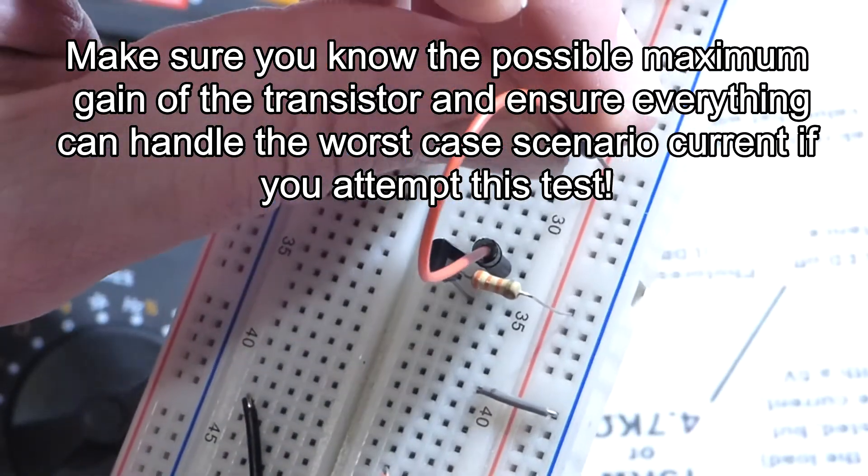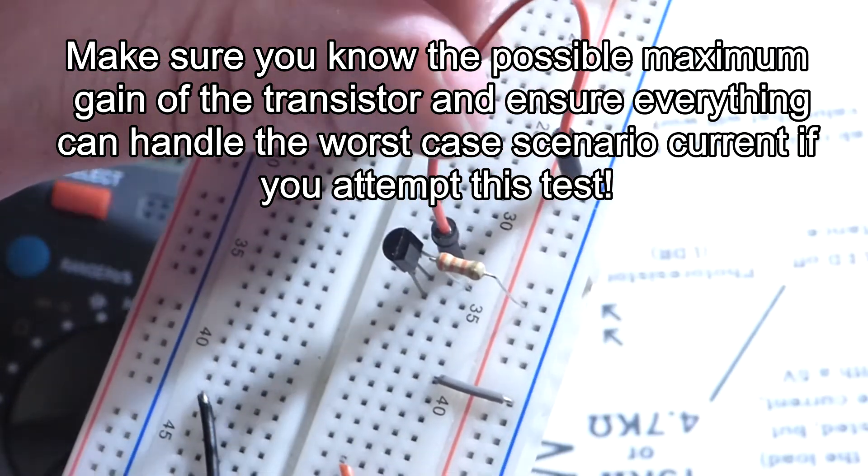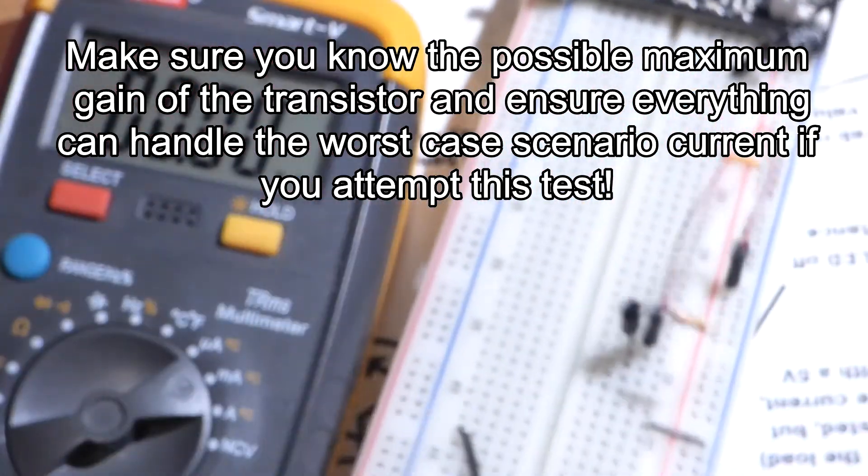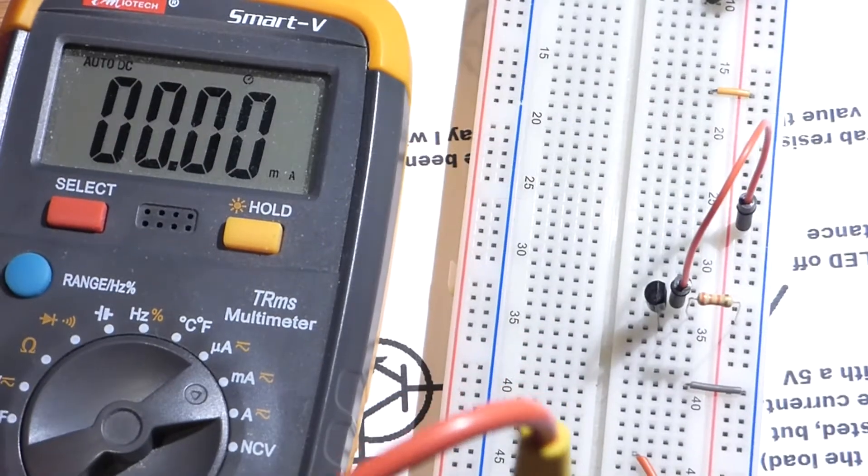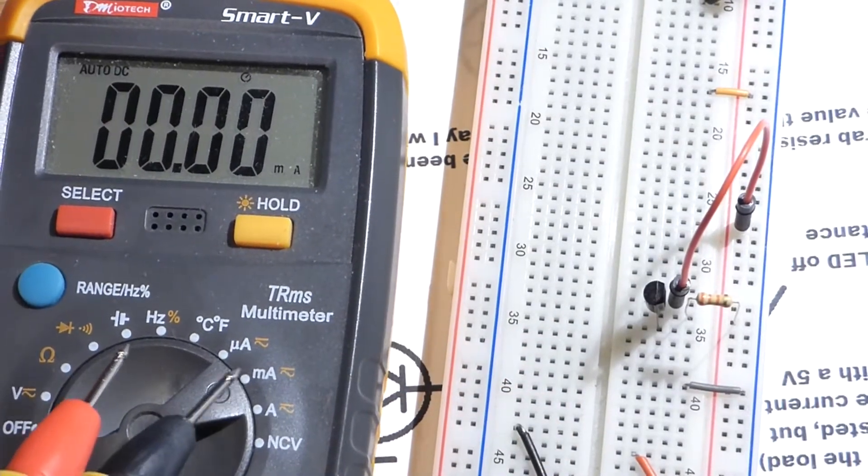There you go. We're going to connect it directly to the positive side of the power rail. Now we're going to take a current measurement in milliamps.